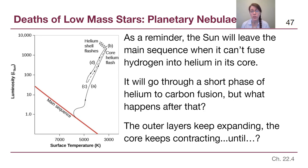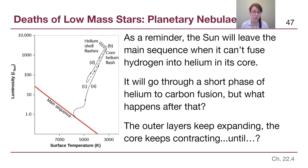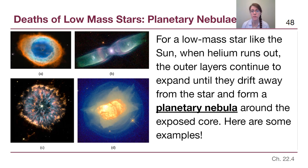At that time, the Sun will have a core filled with carbon that is not producing energy, so gravity is winning out. That core will continue to contract, and because it will heat up as it contracts, the outer layers are going to expand — the gas pressure from that much hotter core causes them to get larger and larger and puff up. Until at some point for a low-mass star like the Sun, the outer layers actually just continue to expand until they disconnect from the star and become a planetary nebula.